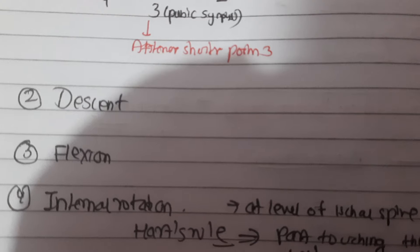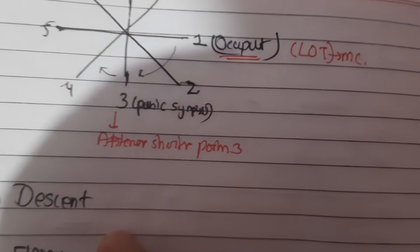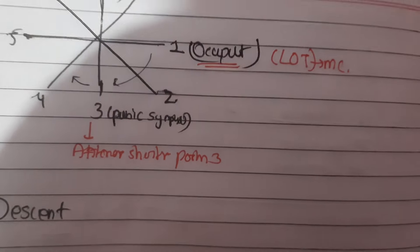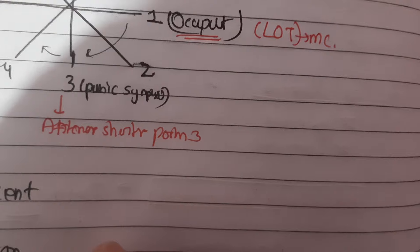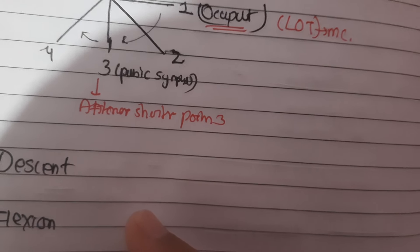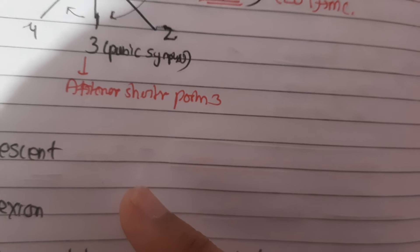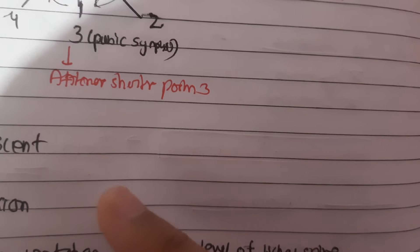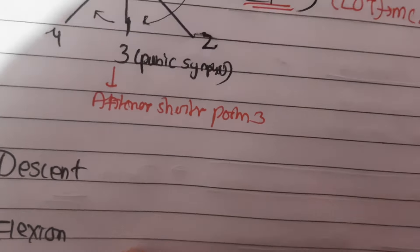Next is descent. Provided there is no undue bony or soft tissue obstruction, descent is a continuous process. It is slow or insignificant in the first stage, more pronounced in the second stage of labor, and completed with the expulsion of the fetus. In primigravida with prior engagement, there is practically no descent during the first stage, while in multipara descent starts with engagement. The passive factors facilitating descent are uterine contraction and retraction, bearing-down efforts, and extension of the ovoid fetal body especially after rupture of the membranes.